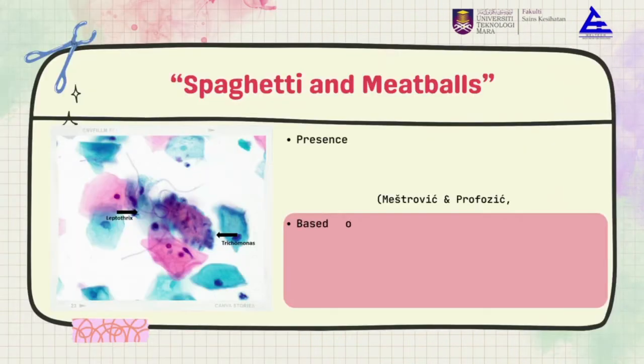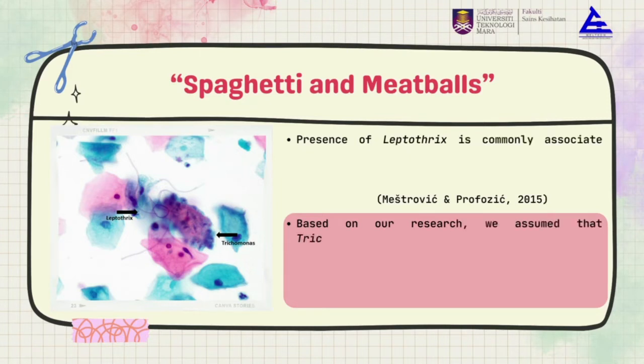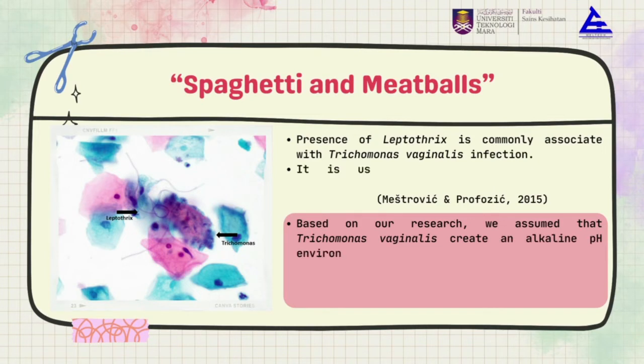The presence of Leptothrix is commonly associated with Trichomonas vaginalis infection. It is usually referred to as 'spaghetti and meatballs' due to their morphological appearance — Trichomonas vaginalis representing the meatballs, while Leptothrix represents the spaghetti.